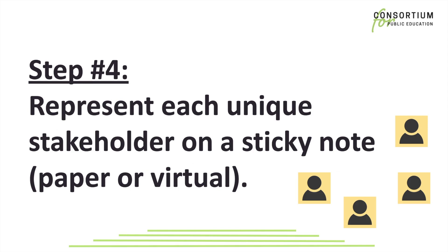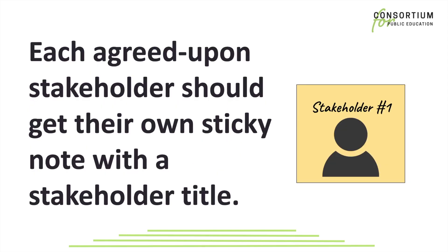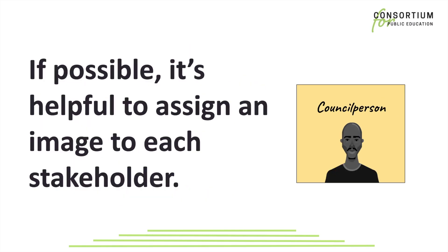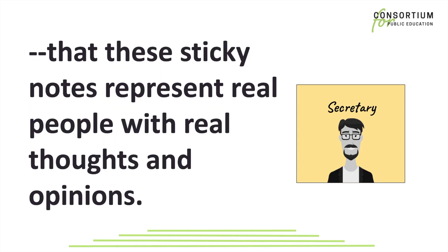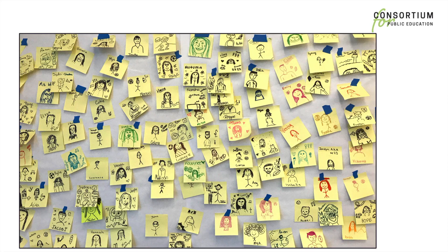Step 4: Represent each unique stakeholder on a sticky note. Each agreed-upon stakeholder should get their own sticky note with a stakeholder title. If possible, it's helpful to assign an image to each stakeholder. This helps to emphasize the humanity of each stakeholder — that these sticky notes represent real people with real thoughts and opinions. Of course, the drawings on your stakeholder map don't have to be fancy. Stick figures and hand drawings are perfectly fine.